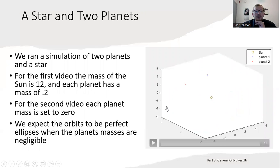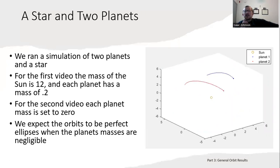We ran a simulation with the velocity Verlet of two planets and a star. For the first video, the mass of the sun is 12 arbitrary units, and each planet has a mass of 0.2. Now the planets are actually interacting with each other, and so it looks like we're not going to get nice elliptical orbits anymore, because the elliptical orbits were a result of the one planet, one star system. Now we've got planets that are interacting with each other, and it's throwing that off.